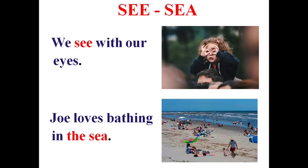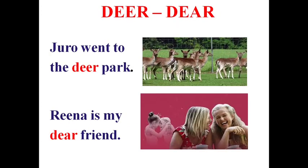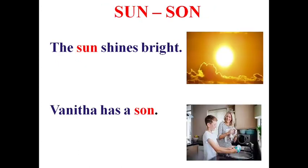See and sea: 'We see with our eyes' — act of seeing; 'Joe loves bathing in the sea.' Root and root: 'The root is very dangerous'; 'The turmeric root can cure many ailments.' Dear and deer: 'Went to the deer park' — a wild animal; 'Reena is my dear friend' — a close friend.